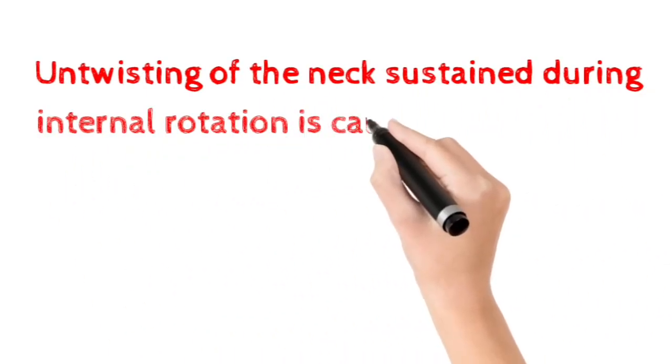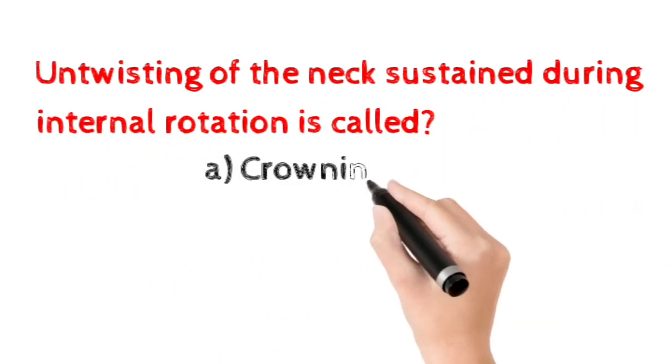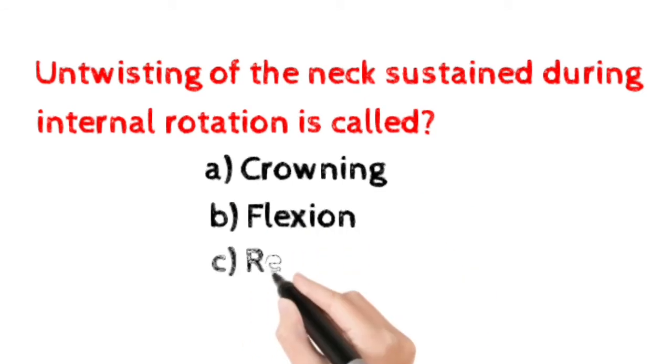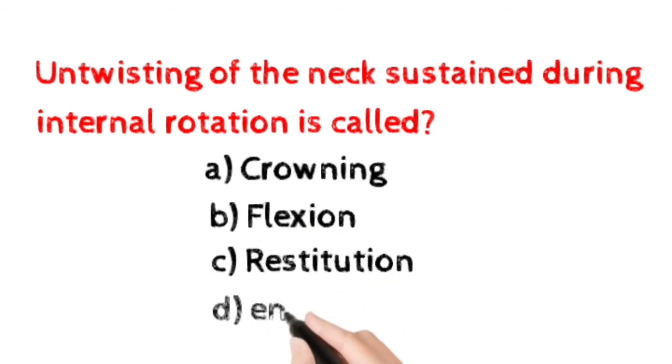Number twelve: Untwisting of the neck sustained during internal rotation is called? Option A: crowning. Option B: flexion. Option C: restitution. Option D: engagement. Here the correct answer is option C, restitution.